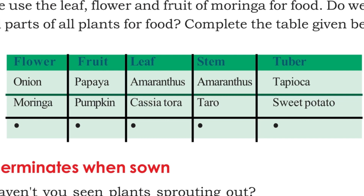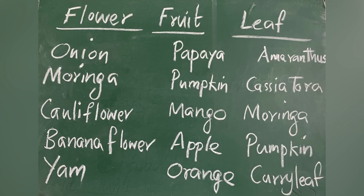Flowers: onion, cauliflower, banana flower, yam. Fruits: papaya, pumpkin, mango, apple, orange. You can add more.